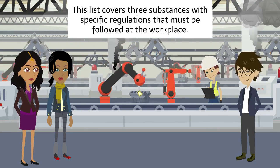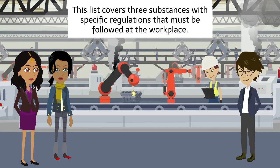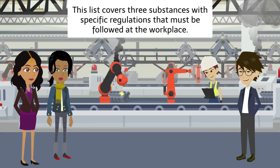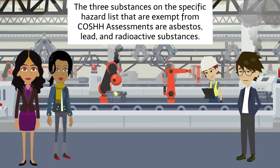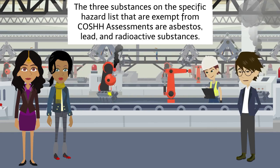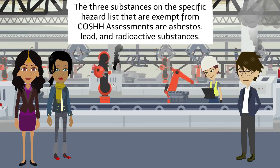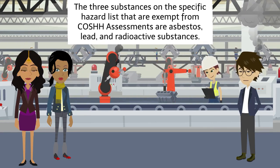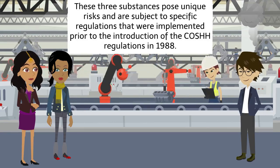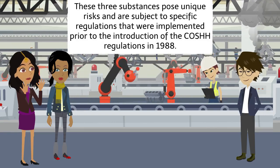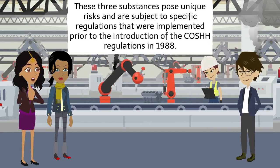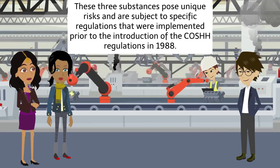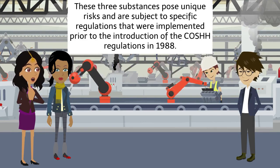This list covers three substances with specific regulations that must be followed at the workplace. The three substances on the specific hazard list that are exempt from COSHH assessments are asbestos, lead, and radioactive substances. These three substances pose unique risks and are subject to specific regulations that were implemented prior to the introduction of the COSHH regulations in 1988.